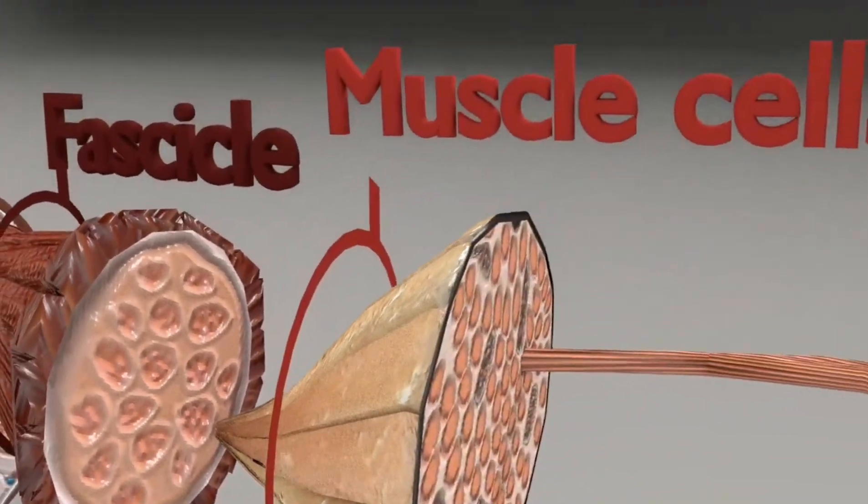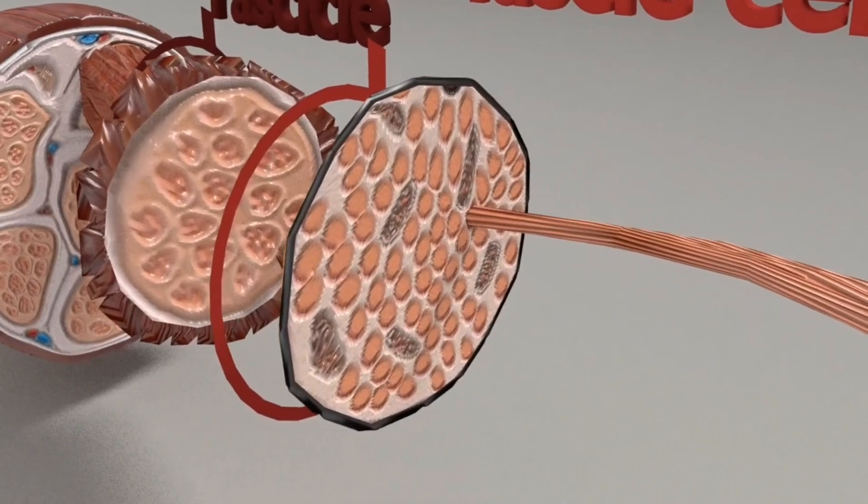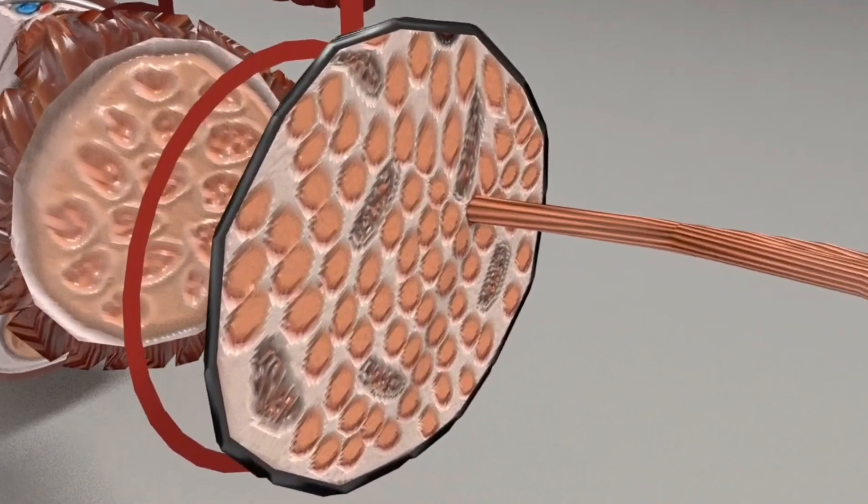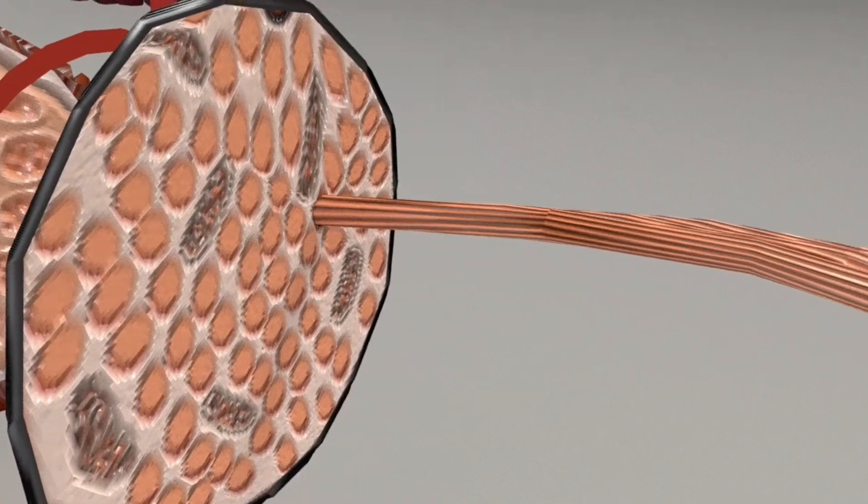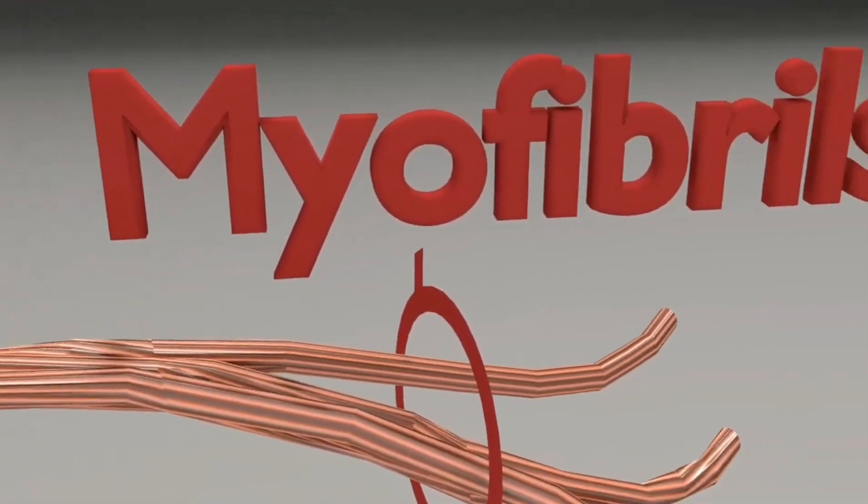Each fascicle is a bundle of multiple muscle fibers surrounded by the perimysium fascia. Each individual fiber is enclosed by endomysium and is made up of multiple myofibrils.